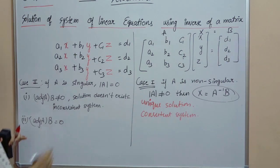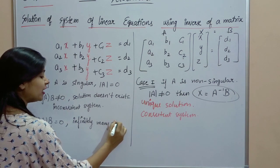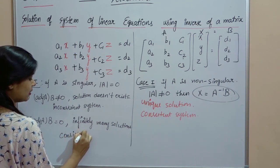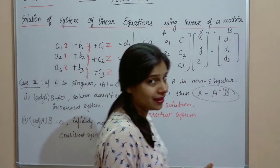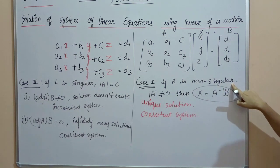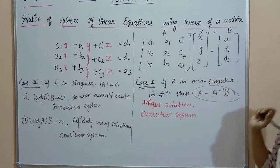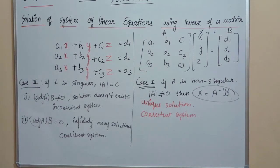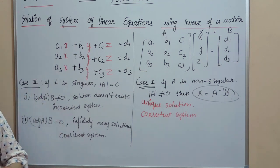Agar adjoint of A into B equals to zero hota hai, it means it has infinitely many solutions. System of equations has infinitely many solutions. Solution toh hai, chahe infinitely many ho, toh yeh system kya ho jaayega? Consistent system. Consistent system kaise pata lagega, inconsistent system kaise pata lagega — yeh pata lagega. Sabse pehle aapko A dekhna hai: non-singular hai means uska unique solution hoga. Solution exist kar raha hai, consistent system hoga.